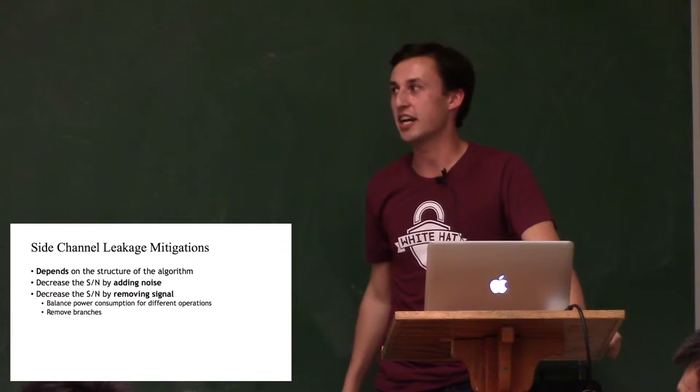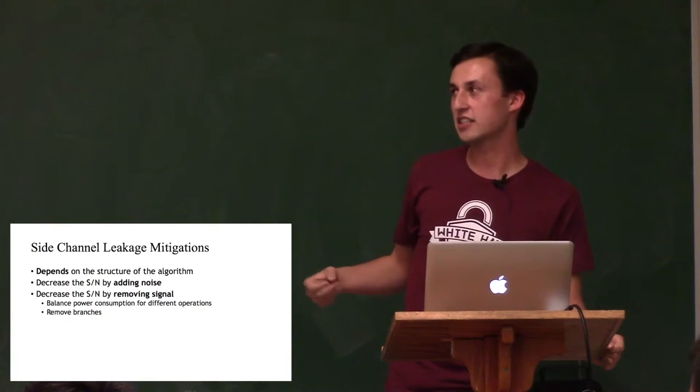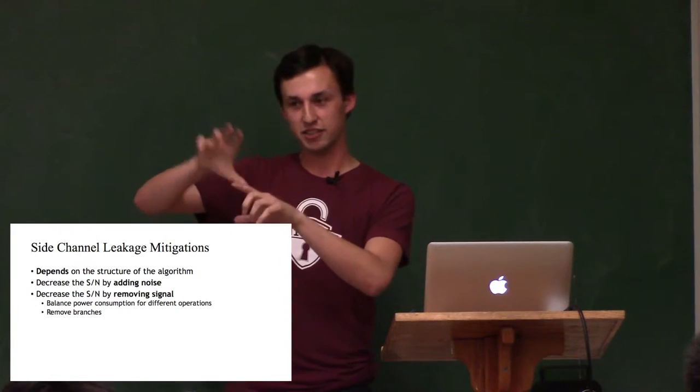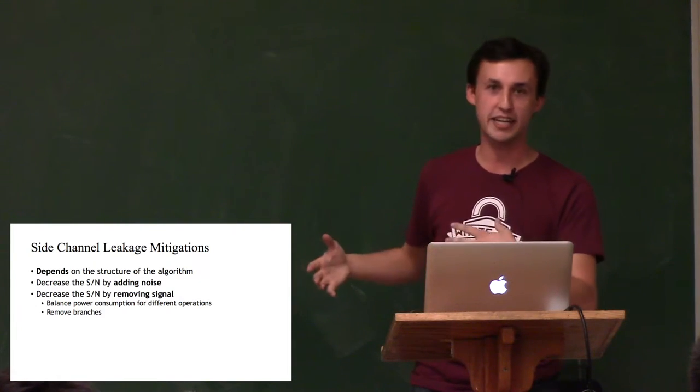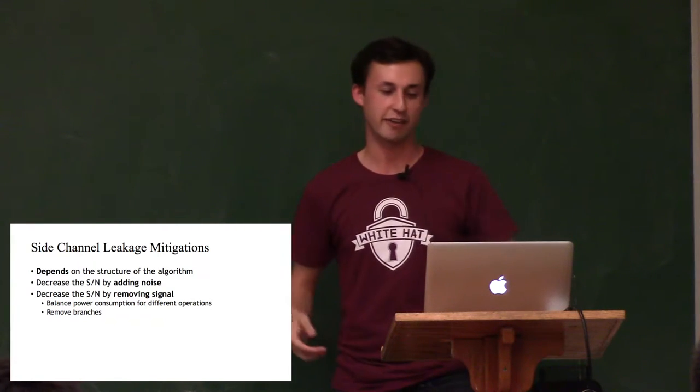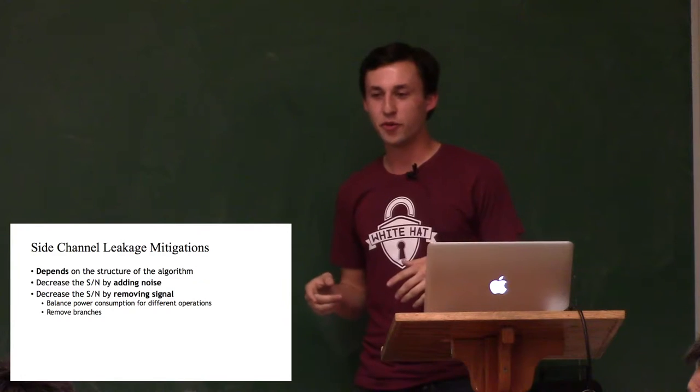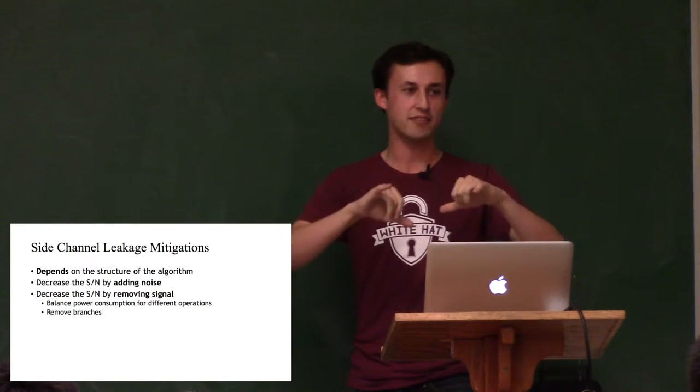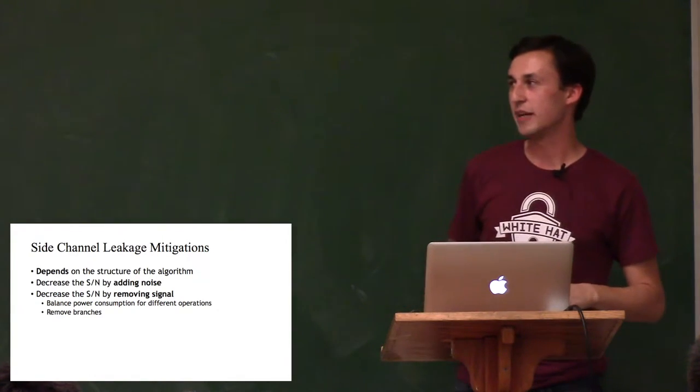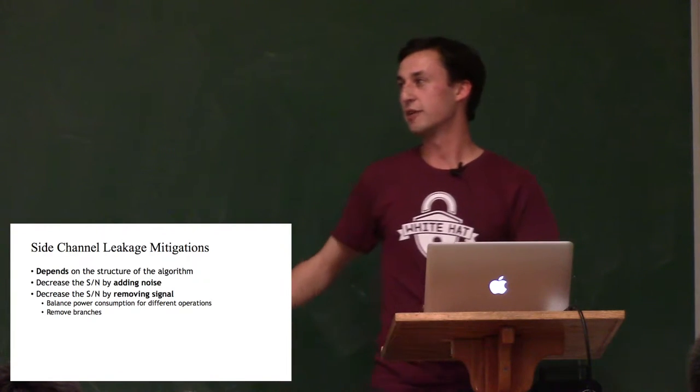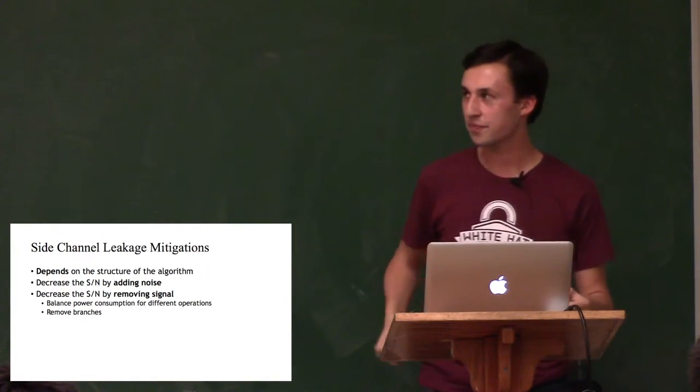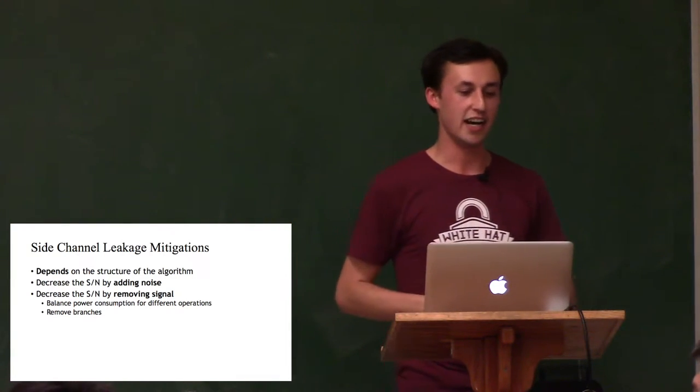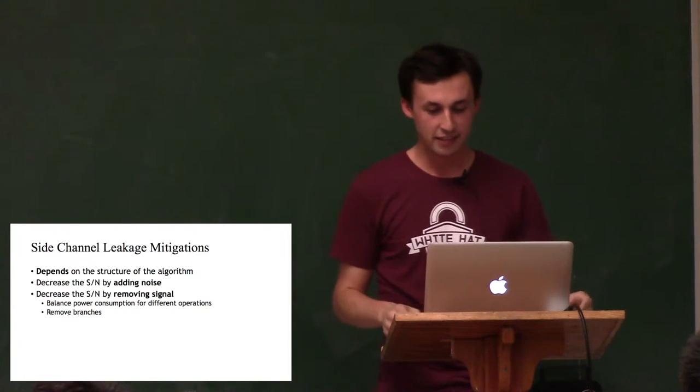So when you're creating logic on an FPGA, you can think about how that logic is being implemented and then change the way you specify it so that the power consumption doesn't change for one operation versus another. Like when we saw RSA had that major power consumption for multiplications versus squaring, you could try to implement your multiplication so that it consumes the same amount of power as a square operation or the other way around. The other thing is to remove branches. The more the input affects what your algorithm does, the more the actual steps change and the more you have differences in power consumption. So, basically, add noise by computing over random numbers, remove signal by doing fewer things different. And my own soon-to-be master's thesis does our side channel leakage mitigation by adding noise.